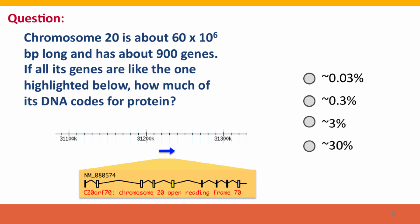Here's a question to give you a sense of scale in the chromosome. Chromosome 20 is about 60 million bases long and it has about 900 genes. Here's a typical gene, and the question asks: if all the genes are like this one, how much of chromosome 20's DNA codes for a protein? To answer this question you'll need to do a bit of arithmetic and a bit of estimating.